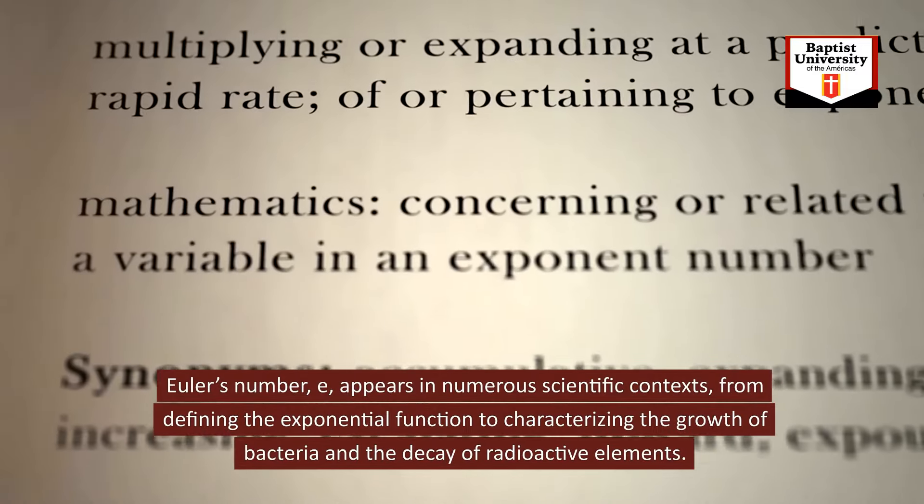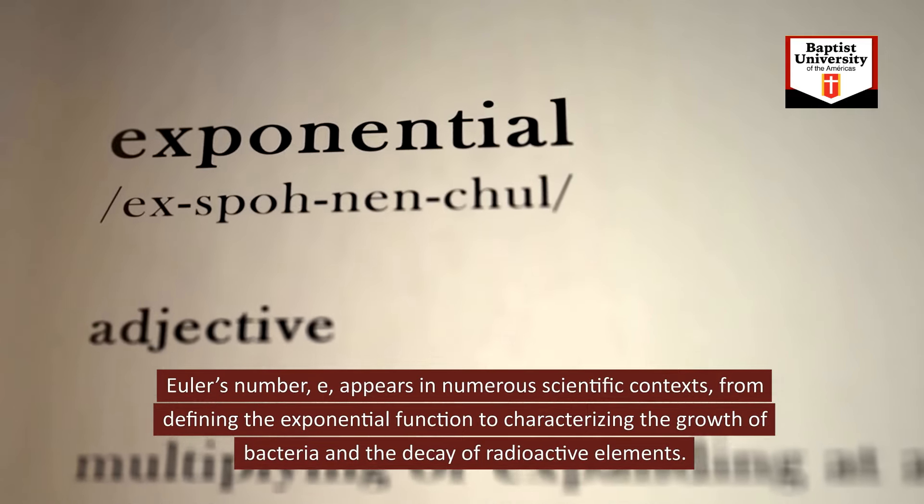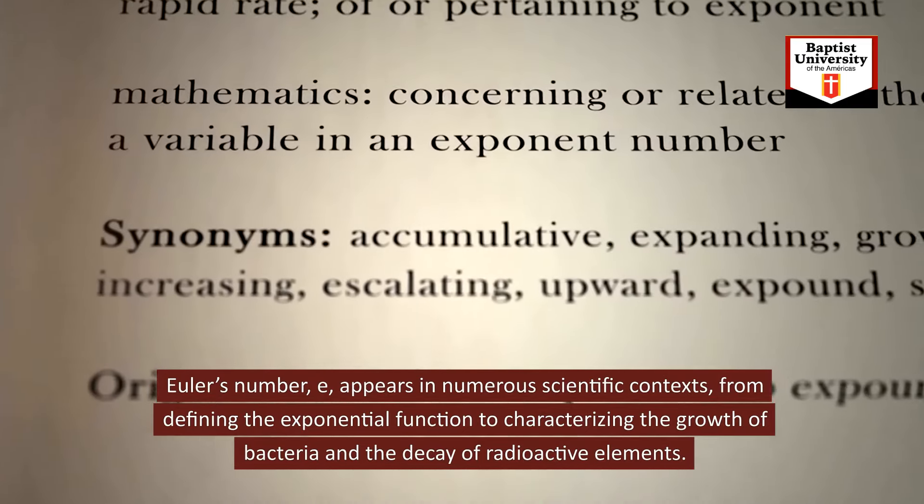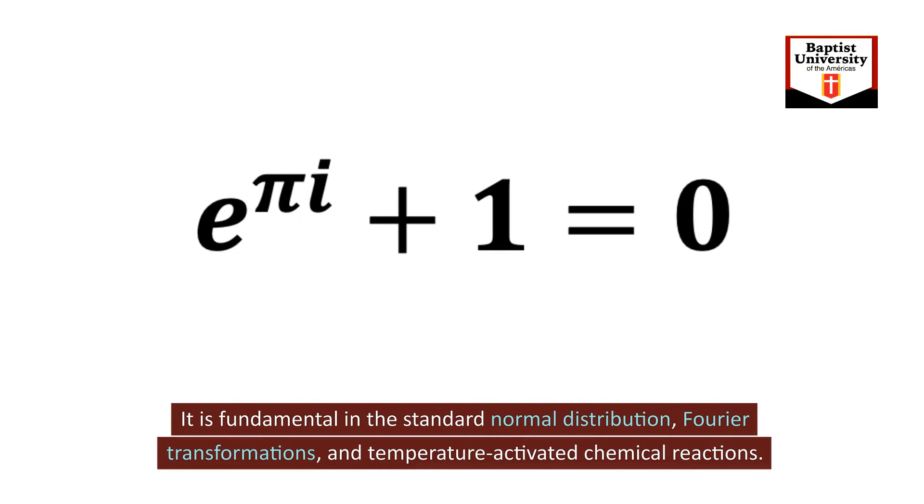Euler's number E appears in numerous scientific contexts, from defining the exponential function to characterizing the growth of bacteria and the decay of radioactive elements. It is fundamental in the standard normal distribution, Fourier transformations, and temperature-activated chemical reactions.